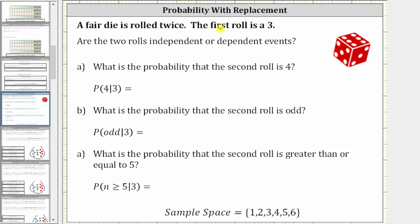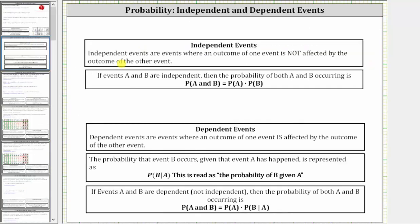A fair die is rolled twice. The first roll is a three. The first question is: are the two rolls independent or dependent events? Independent events are events where an outcome of one event is not affected by the outcome of the other. Dependent events are events where an outcome of one event is affected by the outcome of the other event.